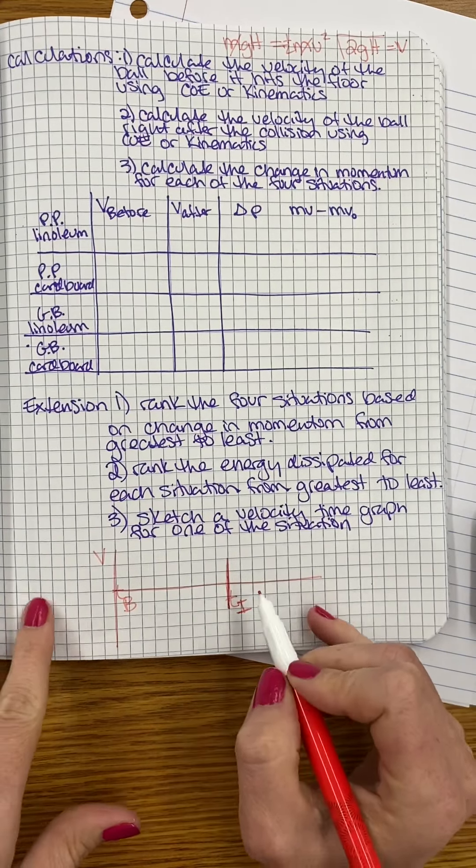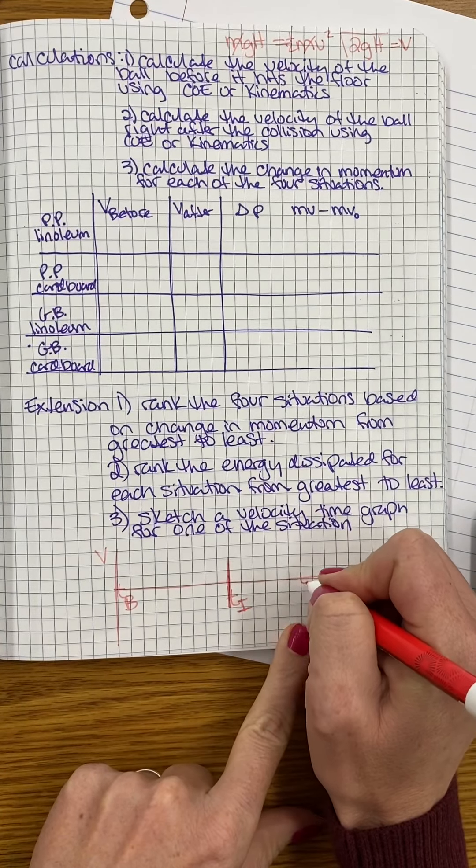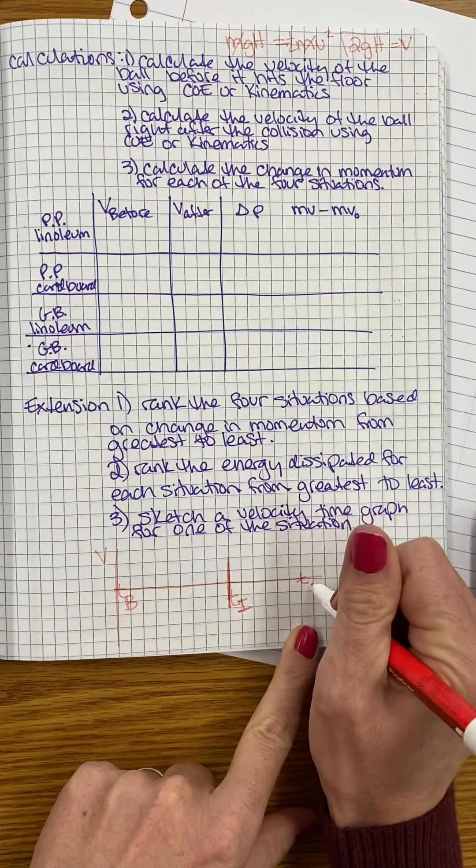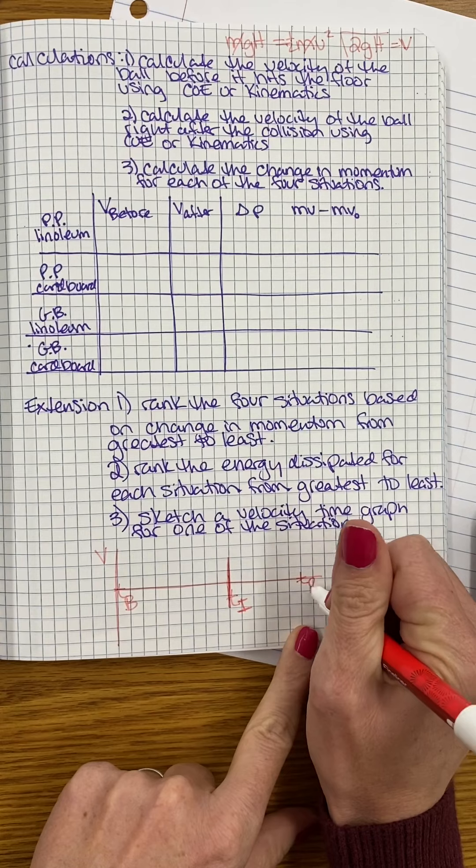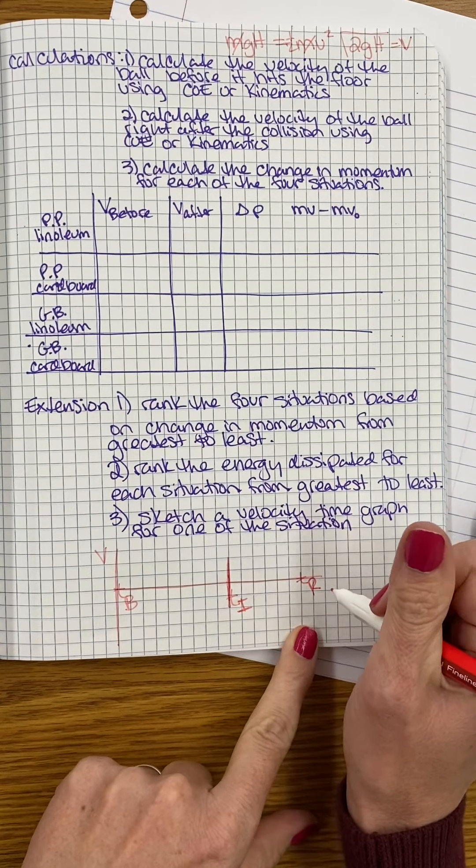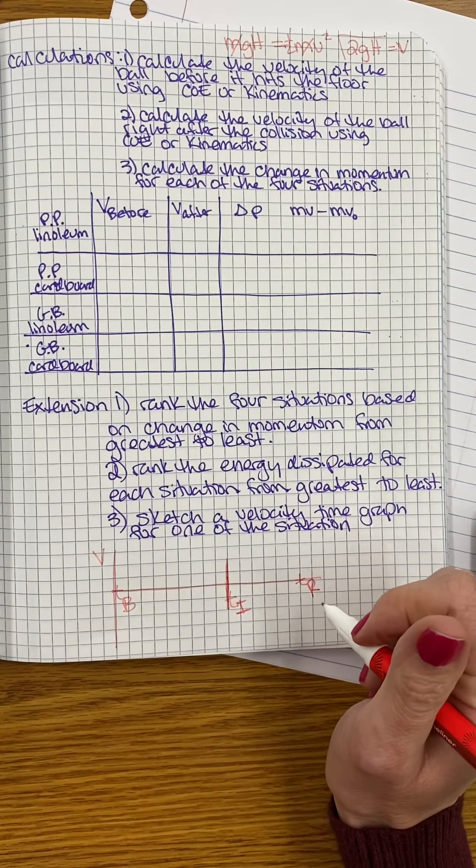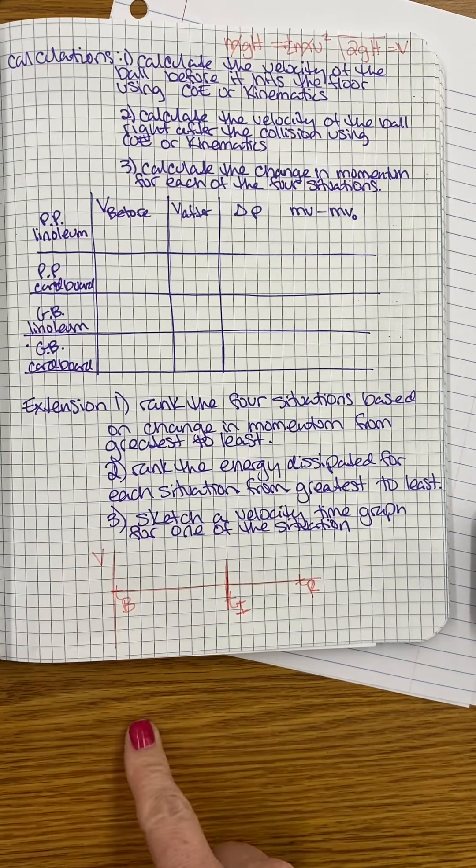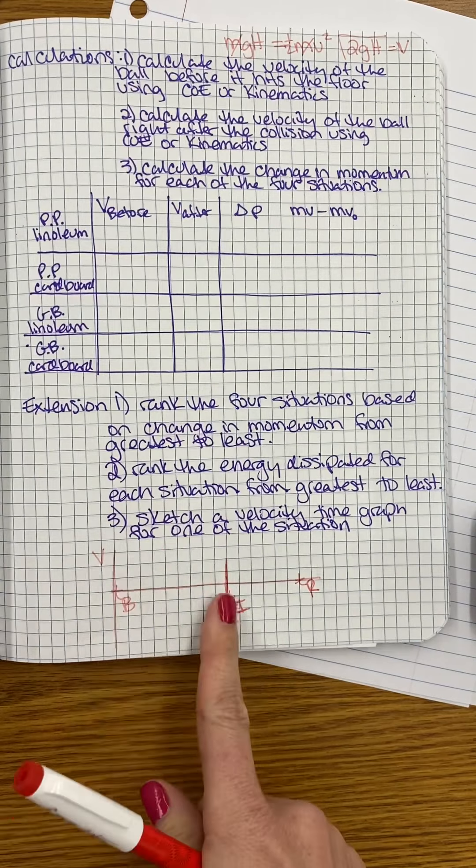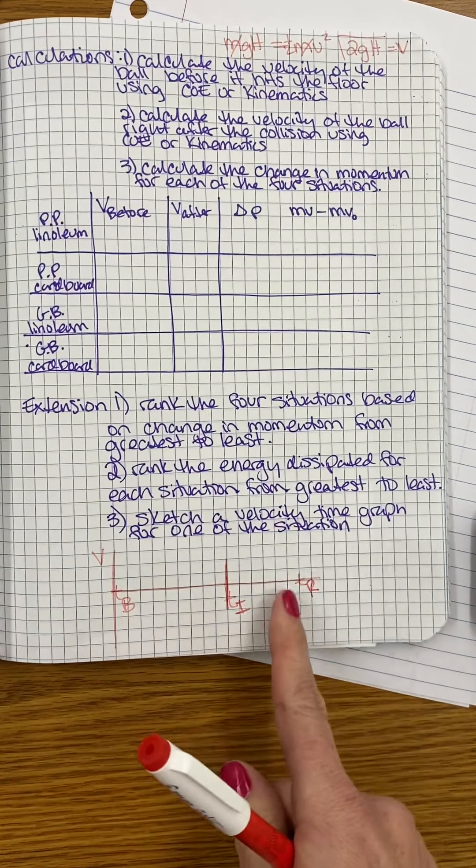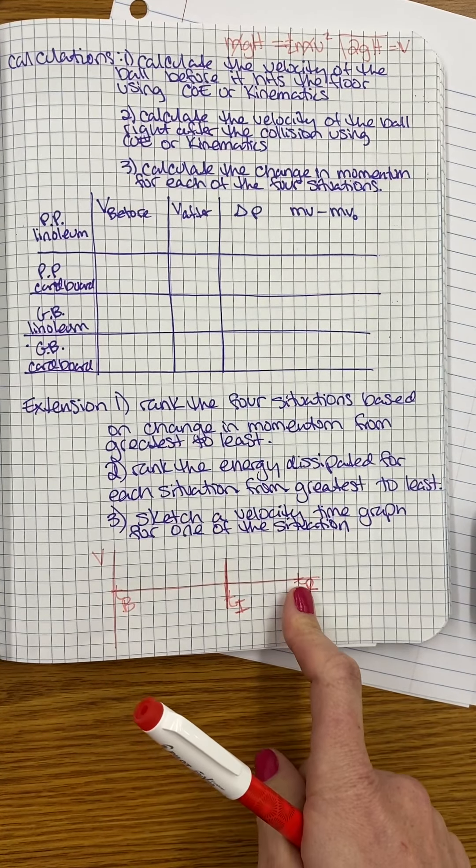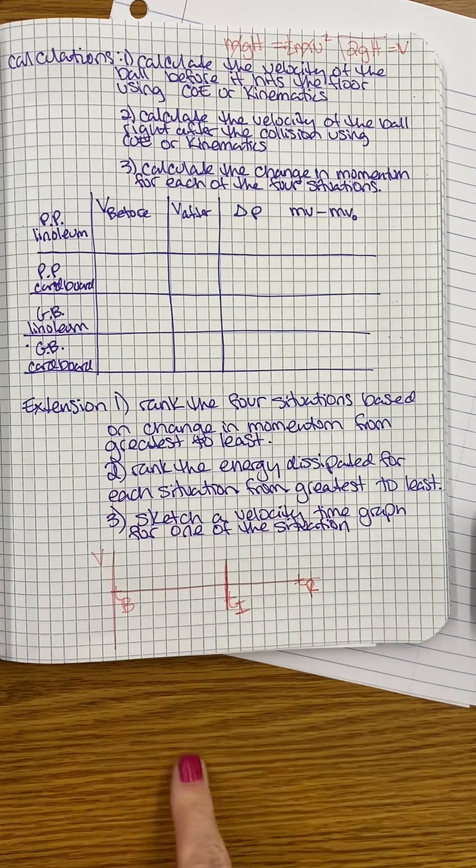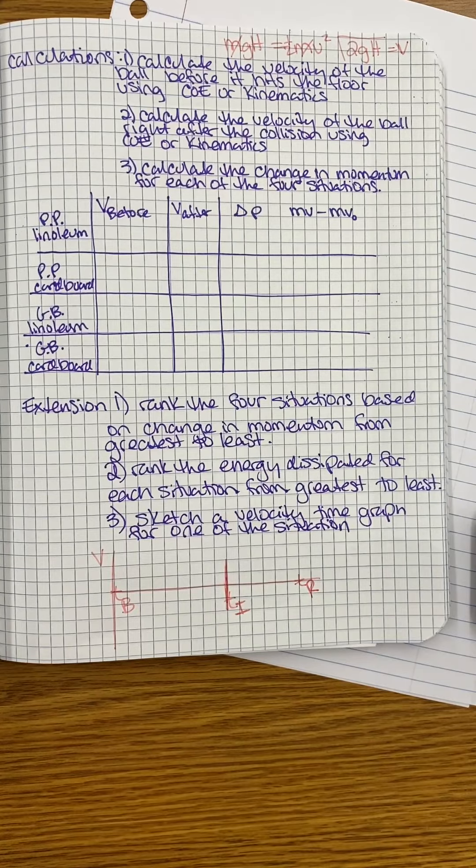And then, your time ending, time that your object returned to whatever height that it came to. We didn't measure the time, we don't need the time. This is just going to be a sketch. If this is when we dropped it, this is when it hit the floor, and this is when it reached the return height. And what is going on with the velocity in between there. That'll be it.